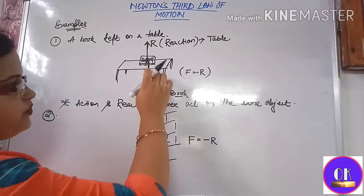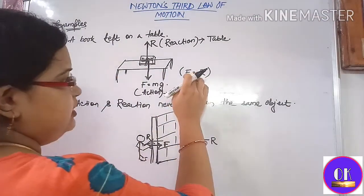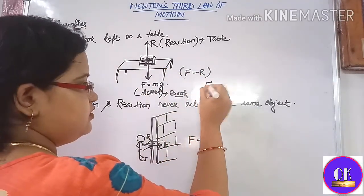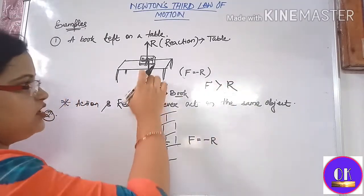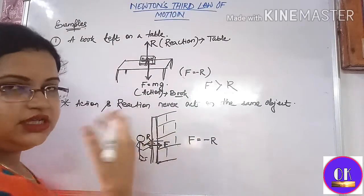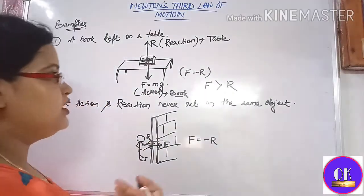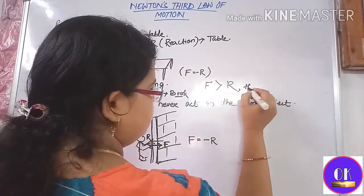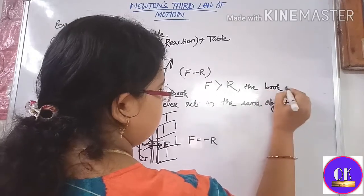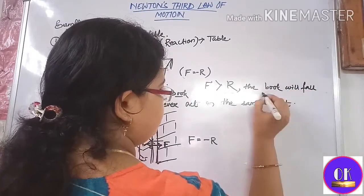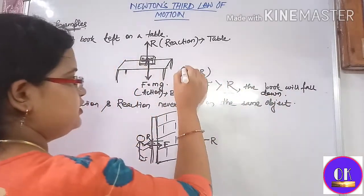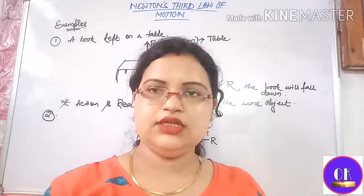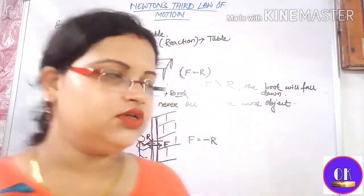Another important point: if the force exerted by the book on the table becomes greater than the reaction force, then the book will fold up. If both forces are equal, then only the book will be in the state of equilibrium.